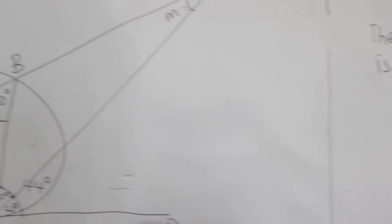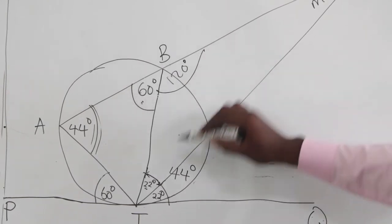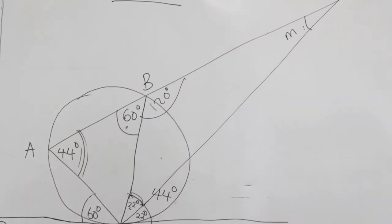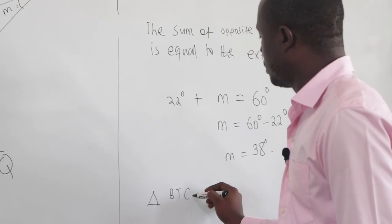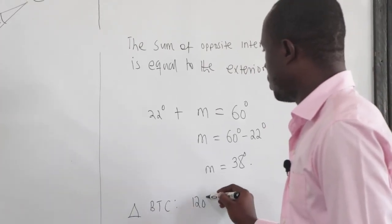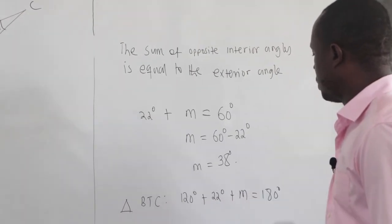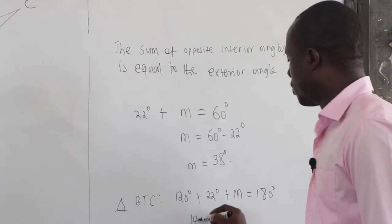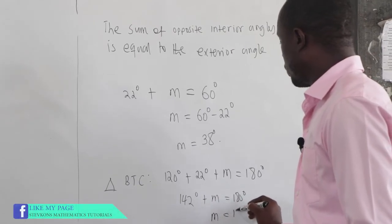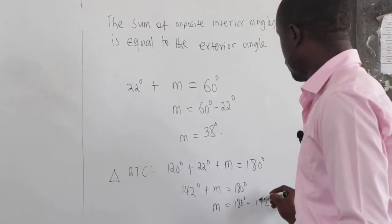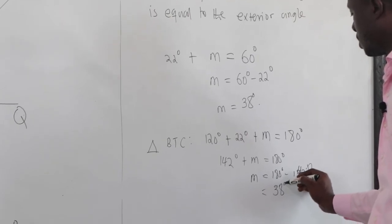From the diagram we can see the angle over here is 120 degrees. Considering triangle BTC with the sum of angles: 120 degrees plus 22 degrees plus M equals 180 degrees. That gives 142 plus M equals 180, so M equals 180 minus 142, which is 38 degrees.